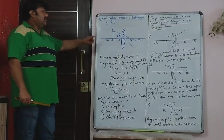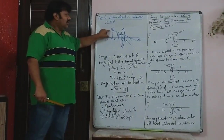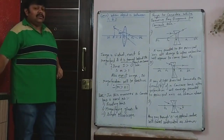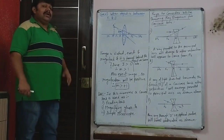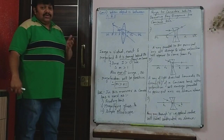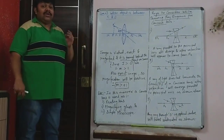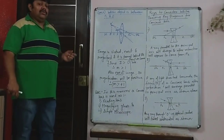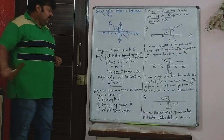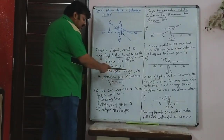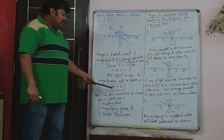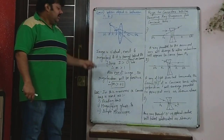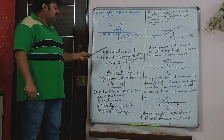In this case, magnification is positive because the image is erect. In all previous cases, the image was inverted — so magnification was negative. Minus stands for inverted and plus stands for erect. Magnification here is positive because the image is erect, and greater than 1 because the image is magnified.